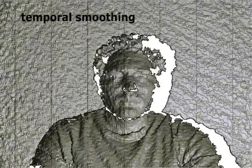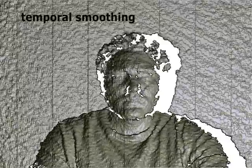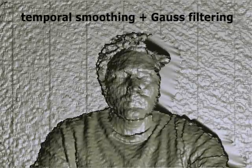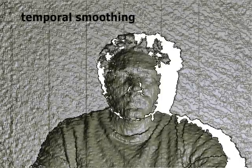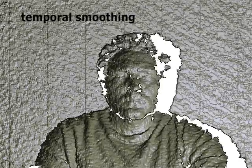This is the raw depth data received by the Kinect sensor. We improve this noisy and hole-containing data in two steps. First, we take the average depth values of eight subsequent frames — we call this step temporal smoothing. In addition, we perform a filtering with a 3x3 Gauss filter.